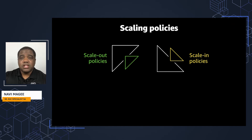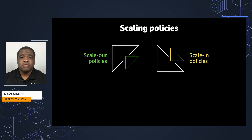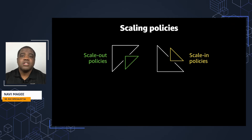On the other side, with scale-in policies, we do the inverse — we reduce the fleet overall until we get down to the minimum capacity number we've set. So if we want to scale in, we'll remove one or two instances until the capacity is equal to or less than that percentage threshold.